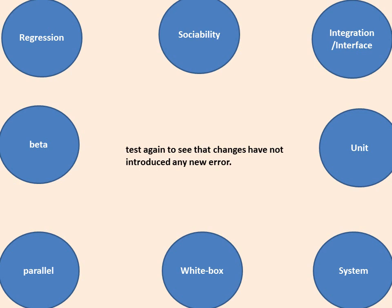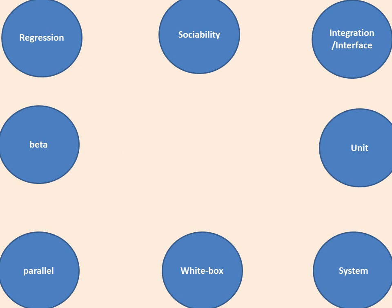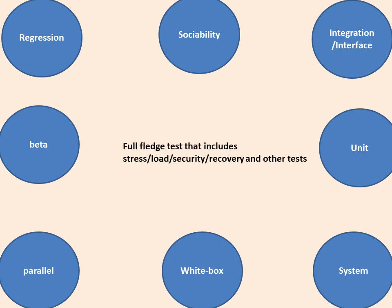Testing again to see that changes have not introduced new errors — the answer is regression testing. Testing by an external user — answer is beta testing; internal testing is done by alpha. A full-fledged test that includes stress, load, security, recovery, and other tests is known as system testing.